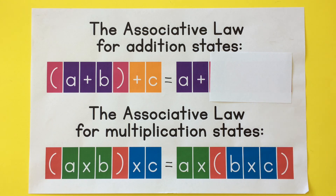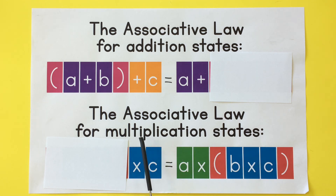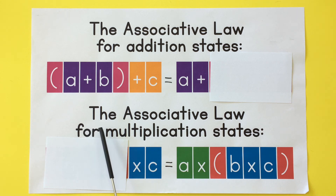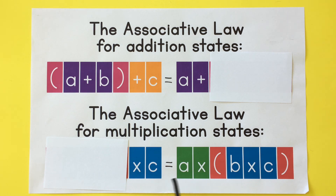Good job! Now I've covered up part of the associative law for multiplication. Do you think you will remember how to say it? Let's try! The associative law for multiplication states: (A times B) times C equals A times (B times C).